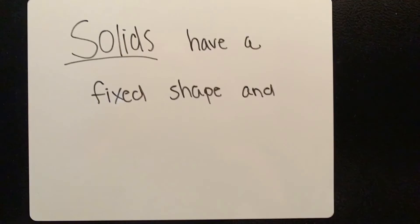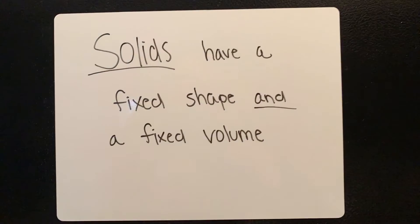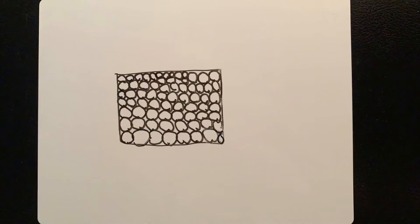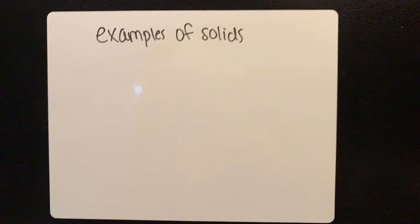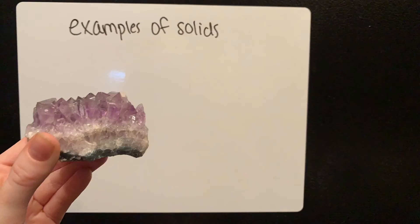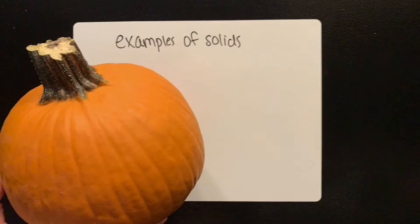Solids have a fixed shape and a fixed volume. The particles of a solid are tightly packed together. Some examples of solids include an apple, a crystal, and a pumpkin.